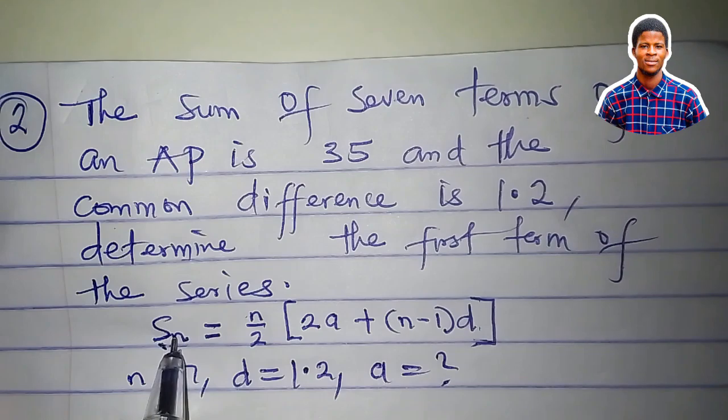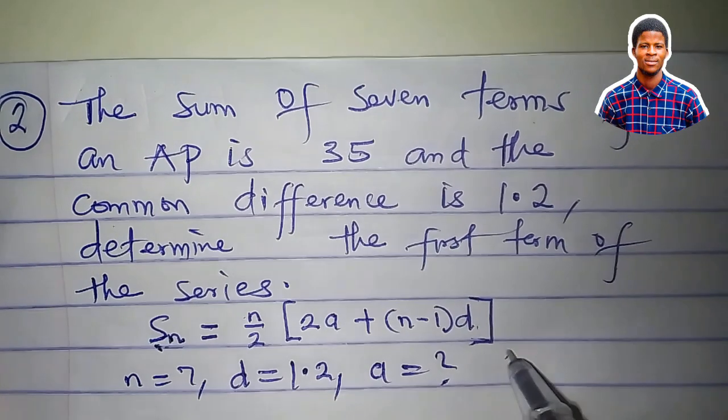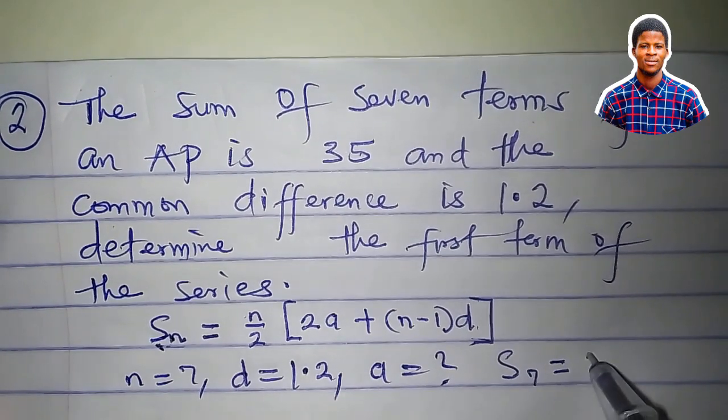The first term is what we are asked to find. The sum itself, which is the sum of 7 terms, is 35. So S_7 equals 35.